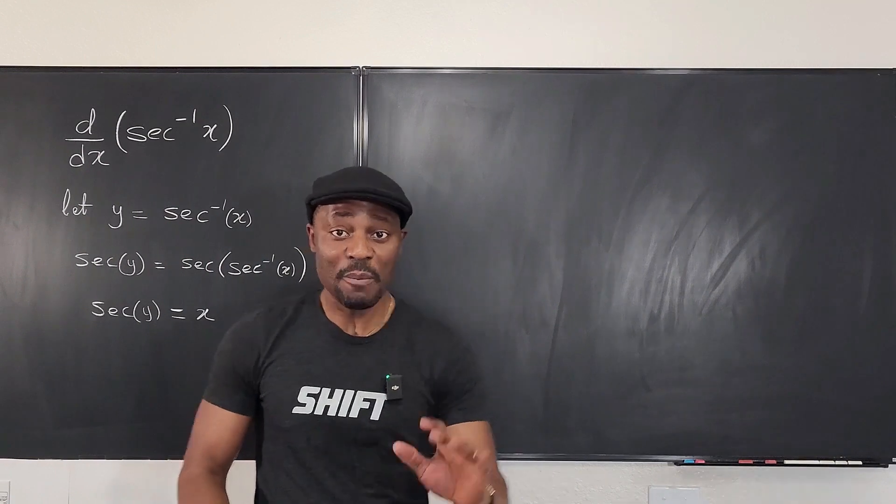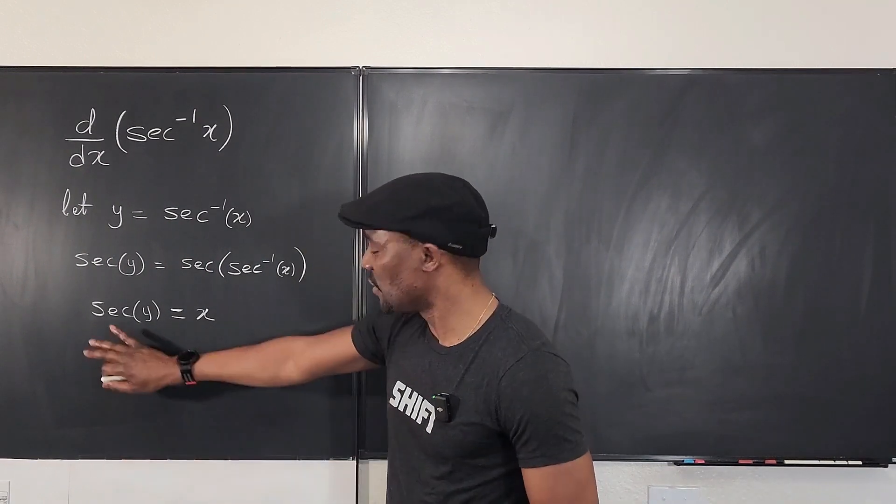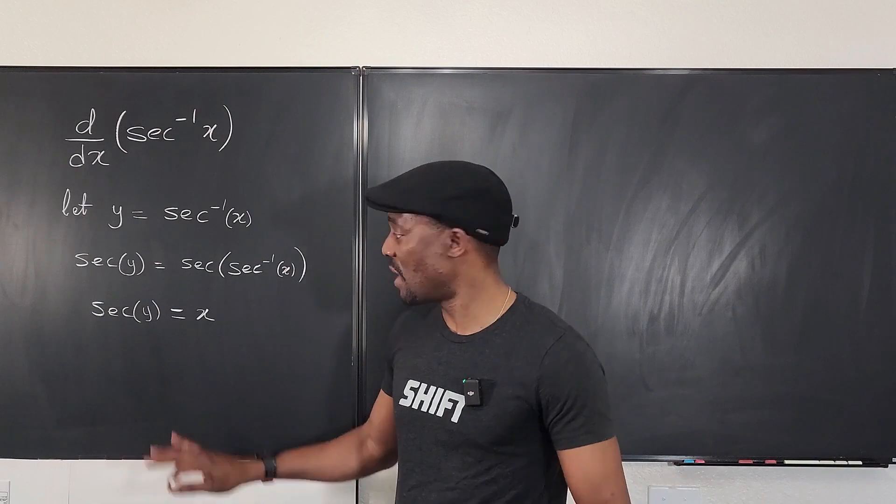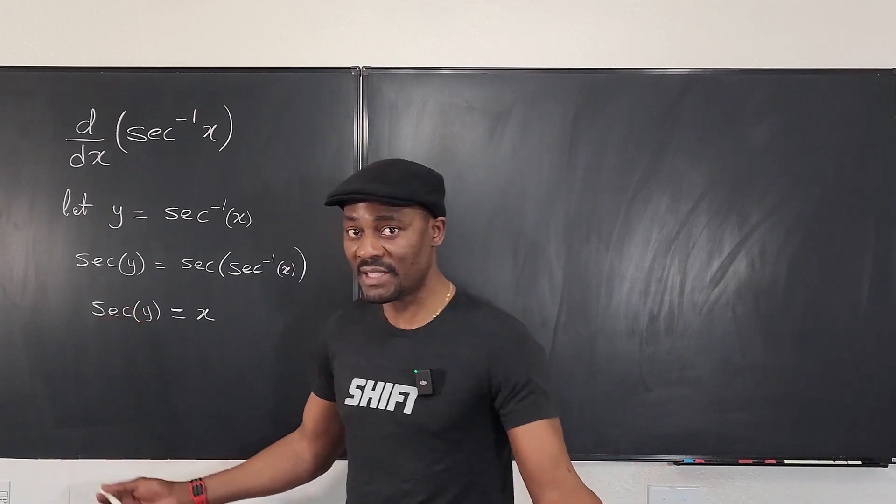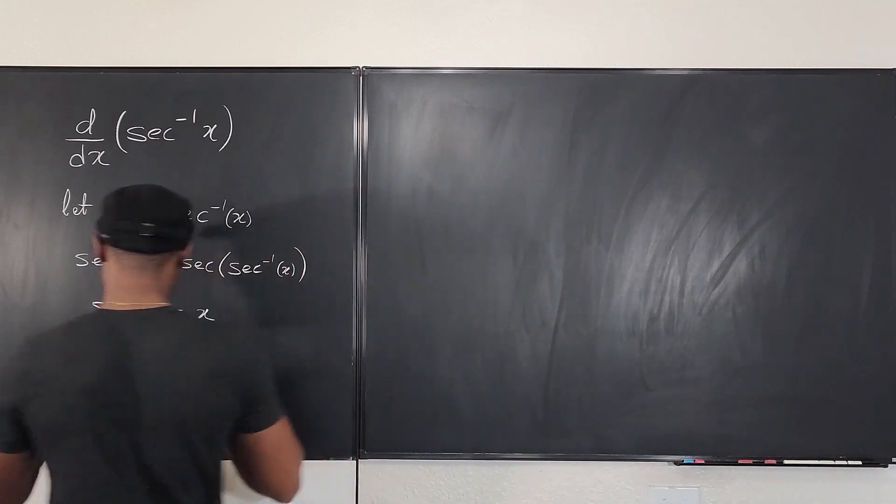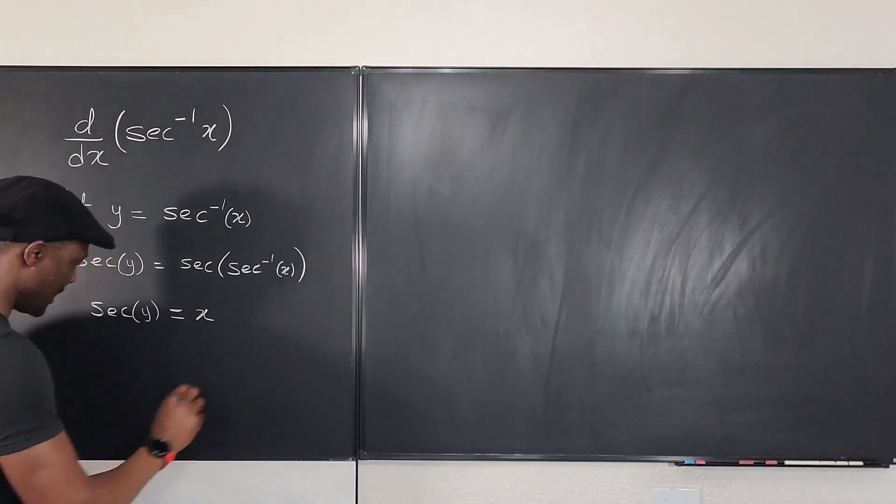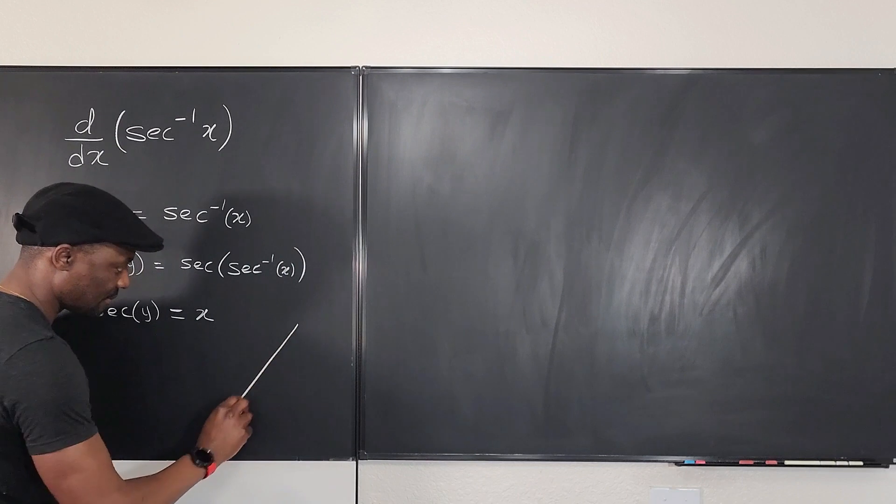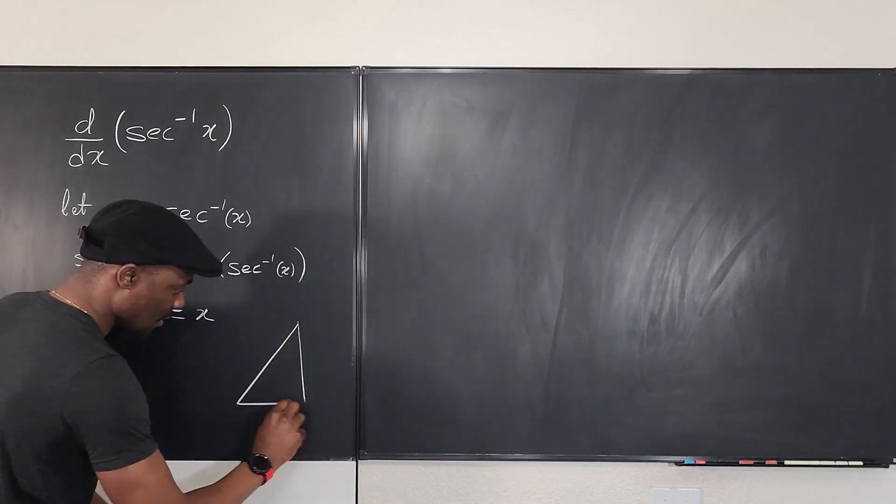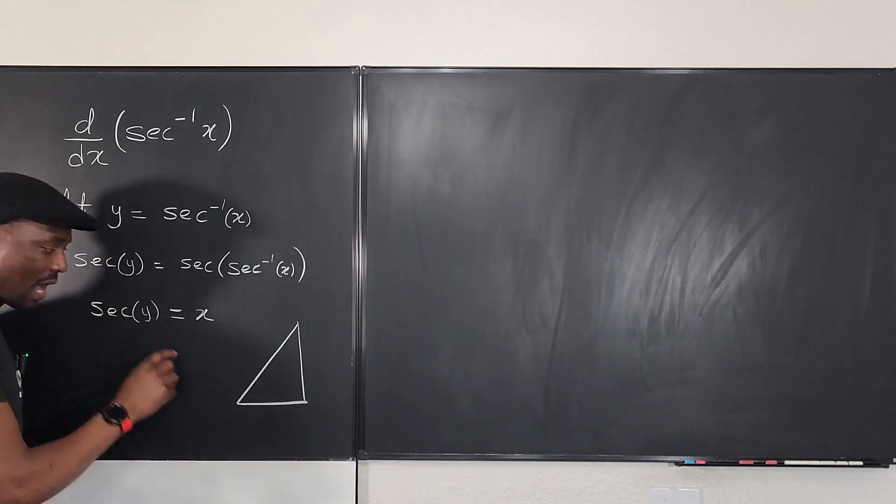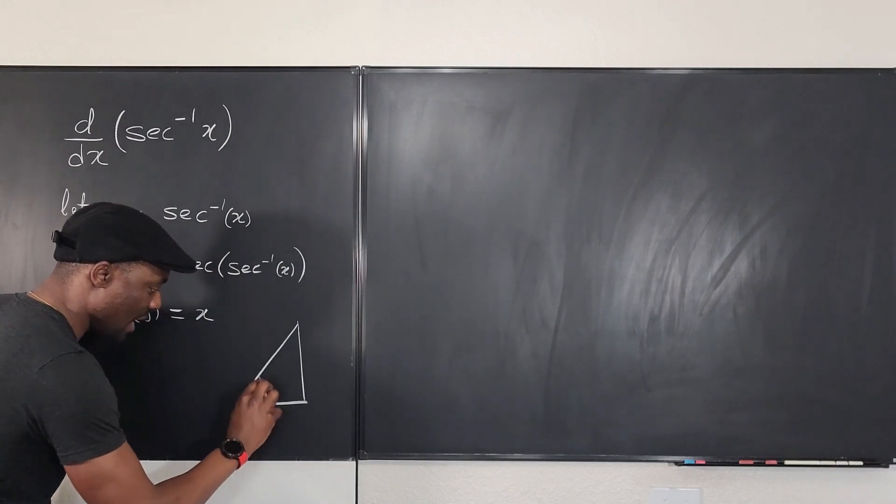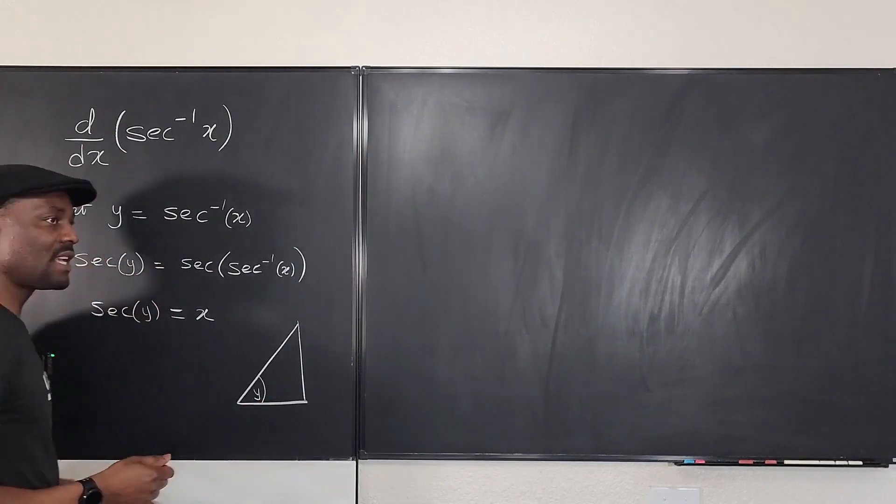Now, because we're going to eventually need it, it's good that you go back and quickly make a triangle representing this trig function. So what is secant y? Let's say we have a triangle. Let's make the triangle here. Now it looks like the angle is y.